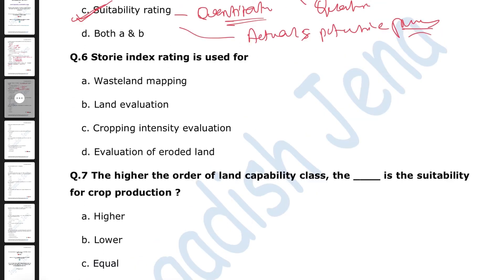Next question: Storie index rating is used for — options are wasteland mapping, land evaluation, cropping intensity evaluation, or evaluation of eroded land. The right answer is land evaluation. Storie index is a quantitative land evaluation method. It classifies land into different gradations: not suitable, very poor, poor, fair, good, and excellent, based on different parameters evaluated across different sections.